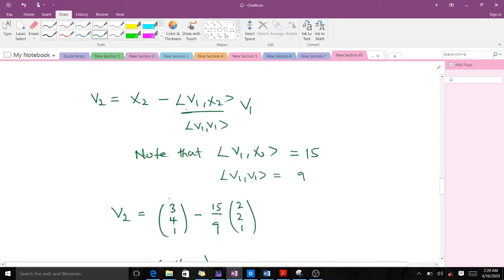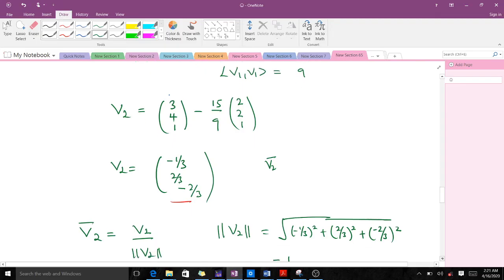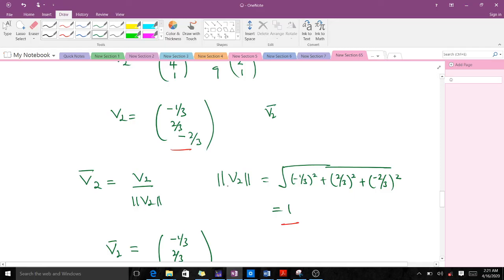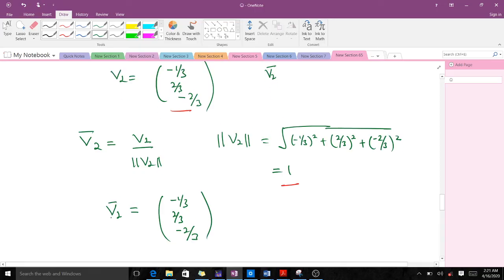To get our V2, V2 is equal to X2 minus the inner product of V1, X2 all over the inner product of V1, V1 times V1. The dot product of our V1 and X2 gives us 15, and that of V1 and V1 gives us 9. When you put everything inside the relation, you get our V2, and simplification gives us this particular column vector. We need to find our V2 bar, which is V2 over the norm of V2. The norm of V2 gives us 1, so our V2 is a unit vector. Our V2 bar will be equal to V2.